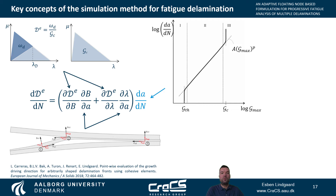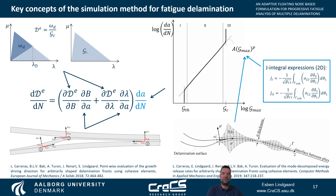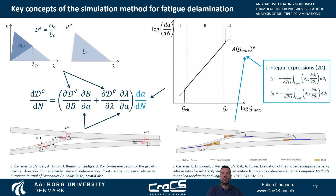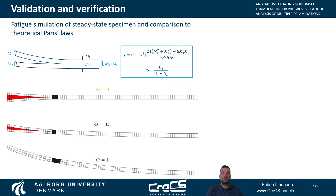The crack growth rate is based on the experimentally determined Paris law, where the current energy release rate is determined by means of the mode-decomposed cohesive J-integral. In the case of multiple delamination, a bookkeeping system is established to identify the crack tips and define the J-integral contours for each crack.